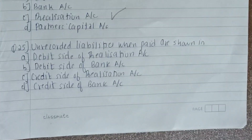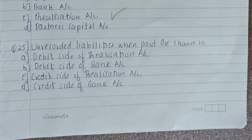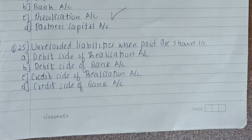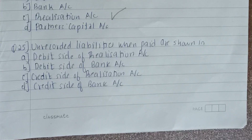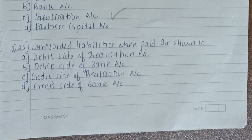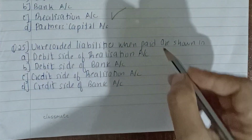Twenty-fifth question: unrecorded liabilities when paid are shown in which of the following accounts — debit side of realization account, debit side of bank account, credit side of realization account, or credit side of bank account? The answer is the debit side of the realization account.